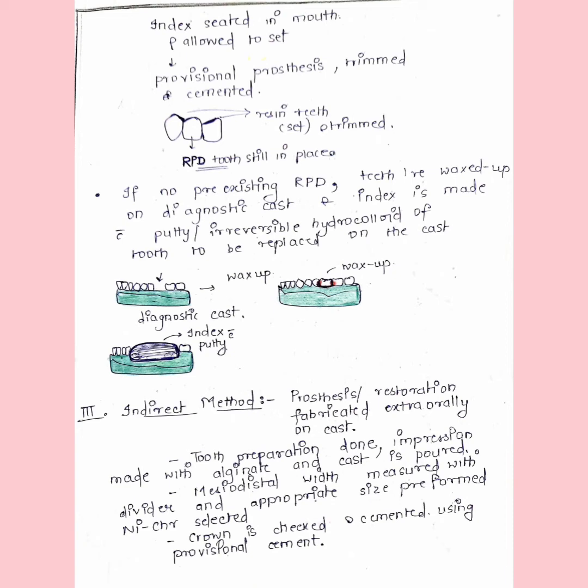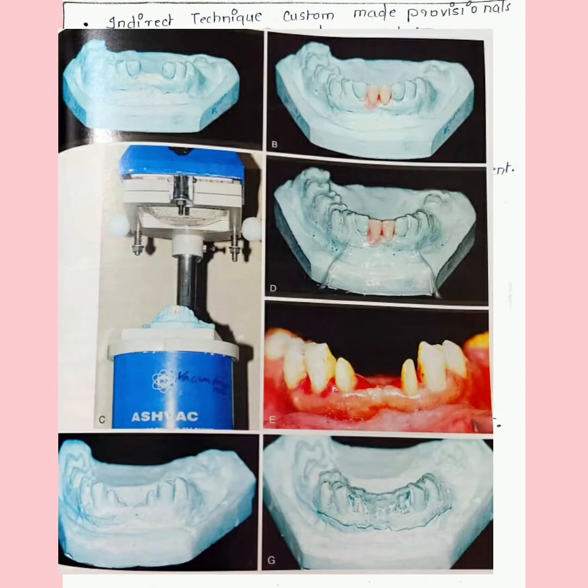Now we move on to the indirect method. In this indirect technique, we're using a template. We get a diagnostic cast, then place the artificial teeth on this cast with putty and not with wax. We are not going to wax up because we're using a thermoforming machine that will sag the splint material, heated material, onto the cast, which would displace teeth if waxed. We place the splint material in this machine and turn on the heating element. The splint material will sag from this machine onto the cast.